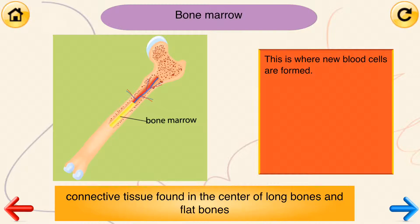Bone marrow. Connective tissue found in the center of long bones and flat bones. This is where new blood cells are formed.